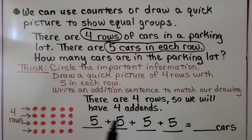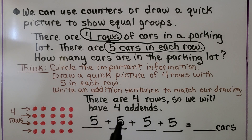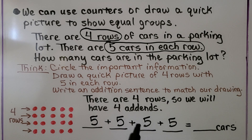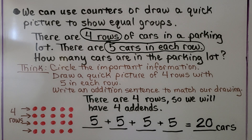And we can add these quickly. We can skip count by 5s: 5, 10, 15, 20. We can also think that 5 plus 5 makes 10, and this 5 plus 5 makes another 10. So we have 10 plus 10, which is equal to 20. There were 4 rows, so we have 4 addends.